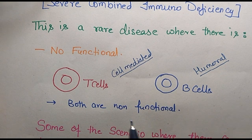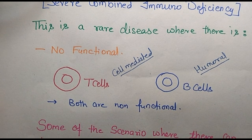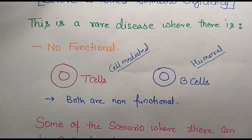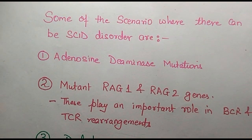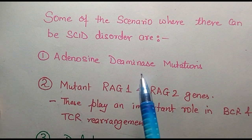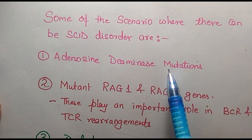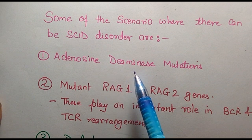That's why the name is 'Severe Combined' — combined means both the T cell as well as the B cell branch are affected. One of the scenarios where SCID disorders can happen is adenosine deaminase (ADA) deletion. Adenosine deaminase is an enzyme of your purine synthesis pathway, and it is very well known to cause the SCID phenotype.